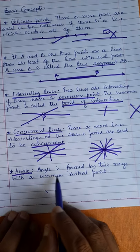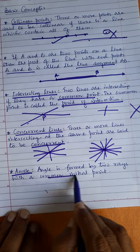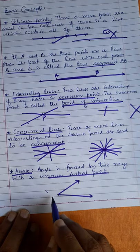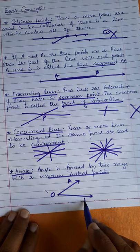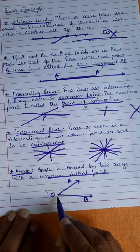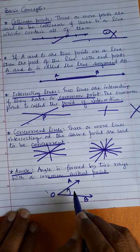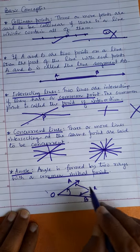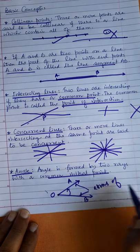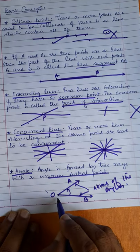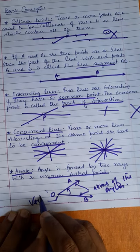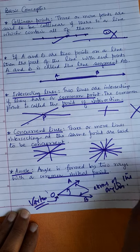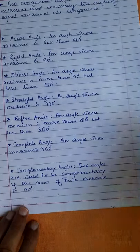Next is angle. An angle is formed by two rays with a common initial point. Suppose from this point one ray is forming and another ray is forming — OA and OB are two rays with the same common point. This forms an angle. These two are called arms of the angle, and the common point is called the vertex. O is the vertex in this case.